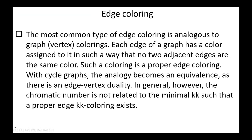Next, edge coloring. Edge coloring is similar to vertex coloring: each edge of a graph has a color assigned so that no two adjacent edges are of the same color — such a coloring is called a proper edge coloring. With cycle graphs, there is an edge-vertex duality. In general, however, the chromatic number is not related to the minimal K such that a proper edge K-coloring exists. That's all for today. Thank you.